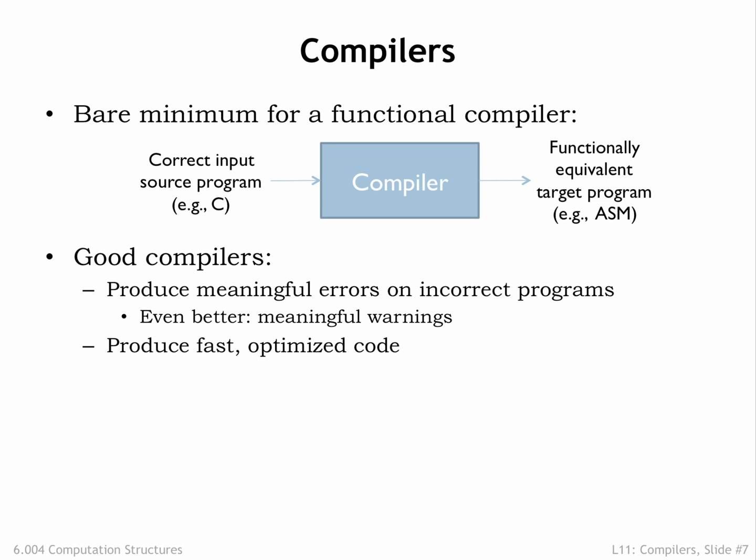or attempting to use the value of a variable before it has been properly initialized. The compiler may also provide warnings when operations may not produce the expected results, e.g., when converting from a floating-point number to an integer, where the floating-point value may be too large to fit into the number of bits provided by the integer.